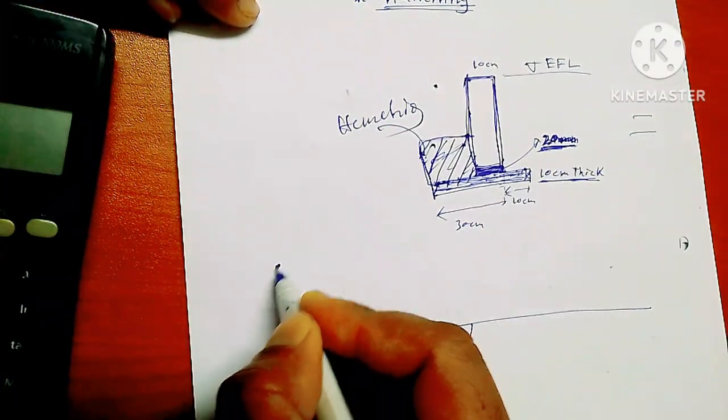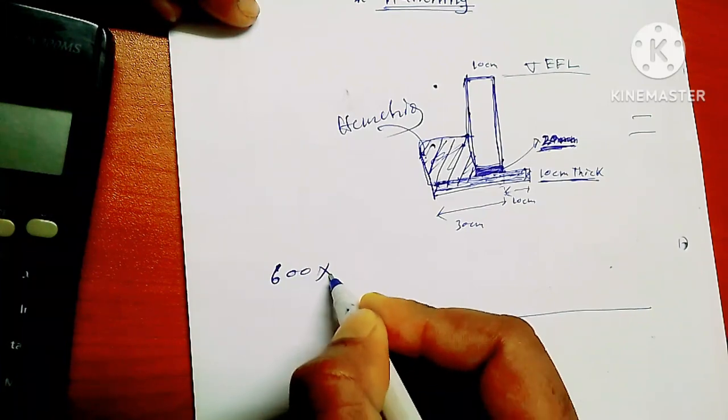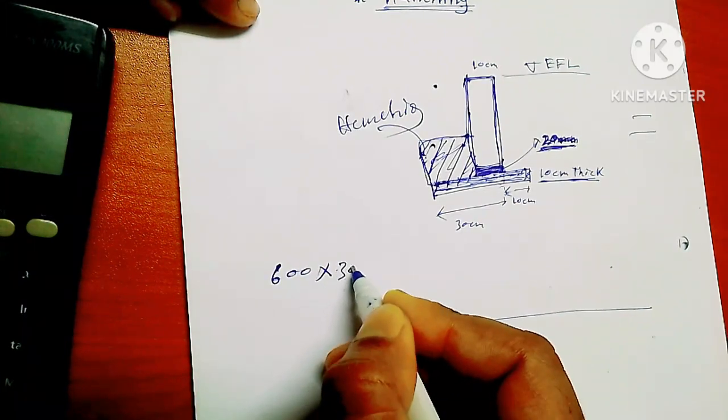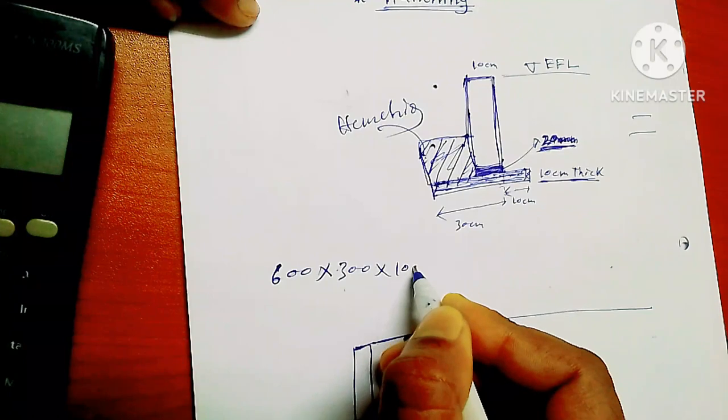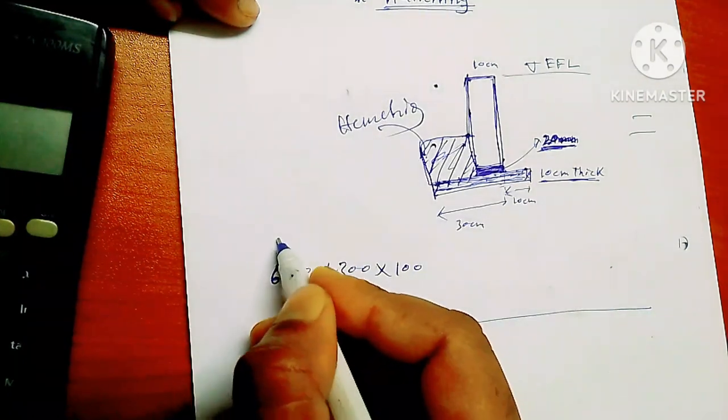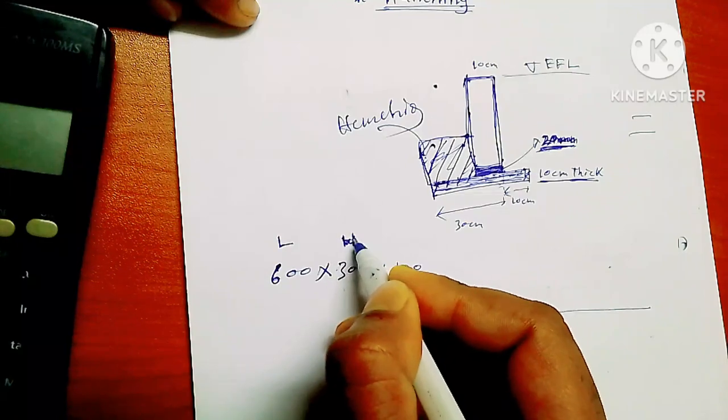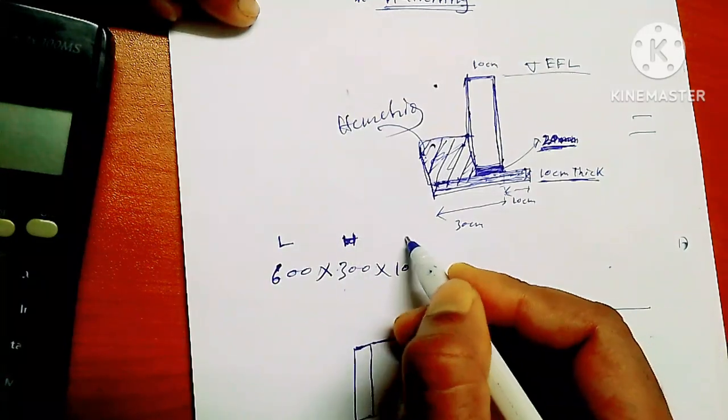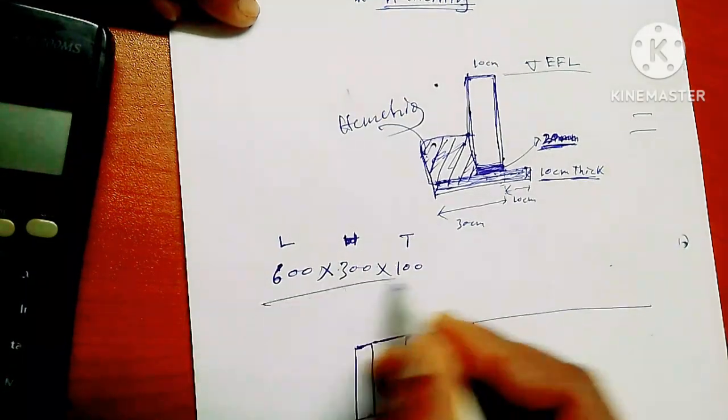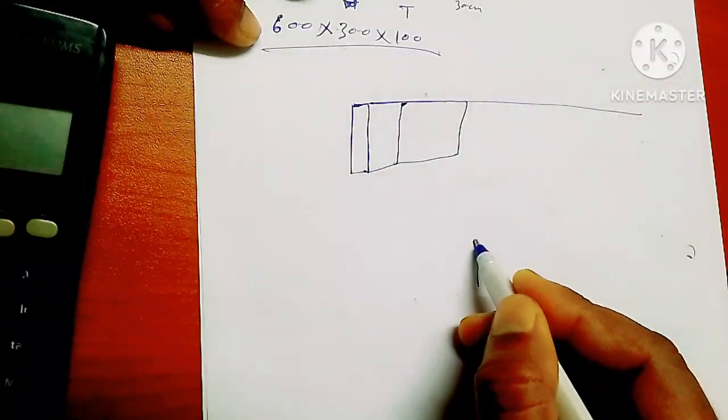And the curb stone size is 600 into 300 into 100. It means this is the length, this is the width, this is the height, and this is the thickness. This is the curb stone.